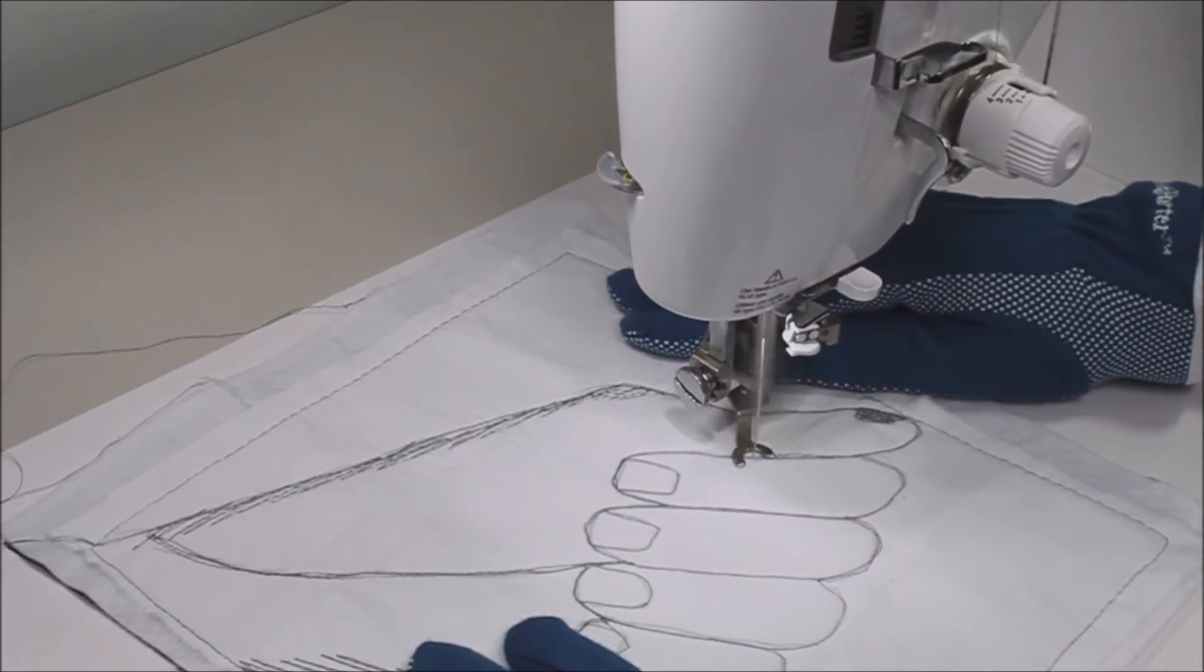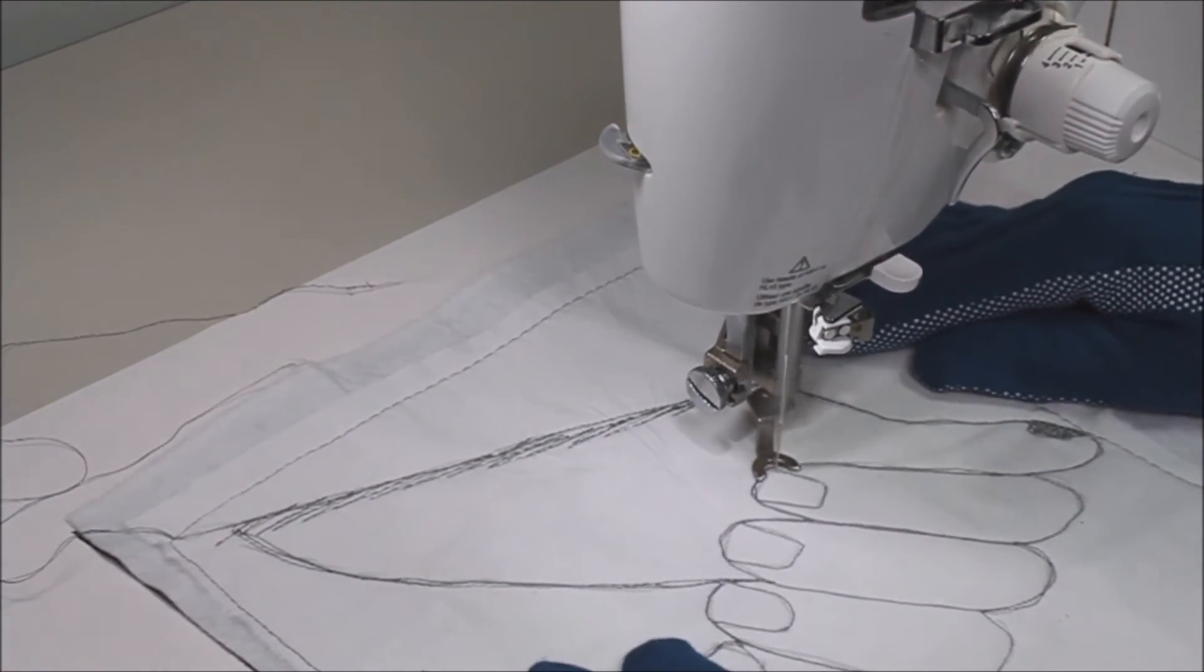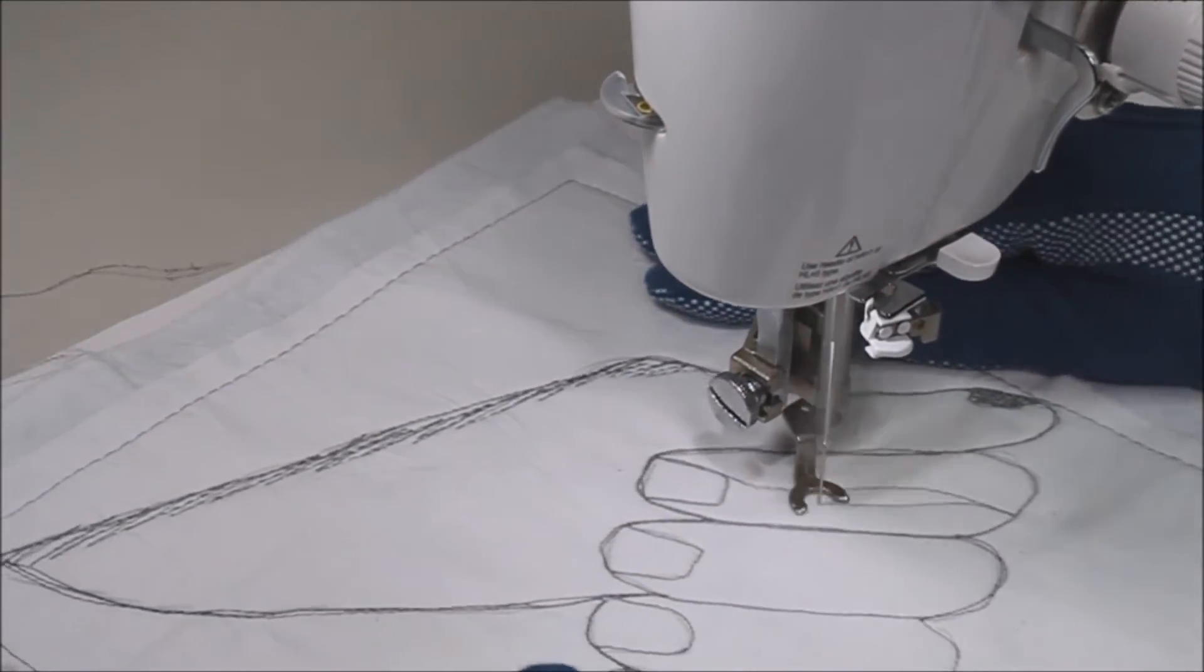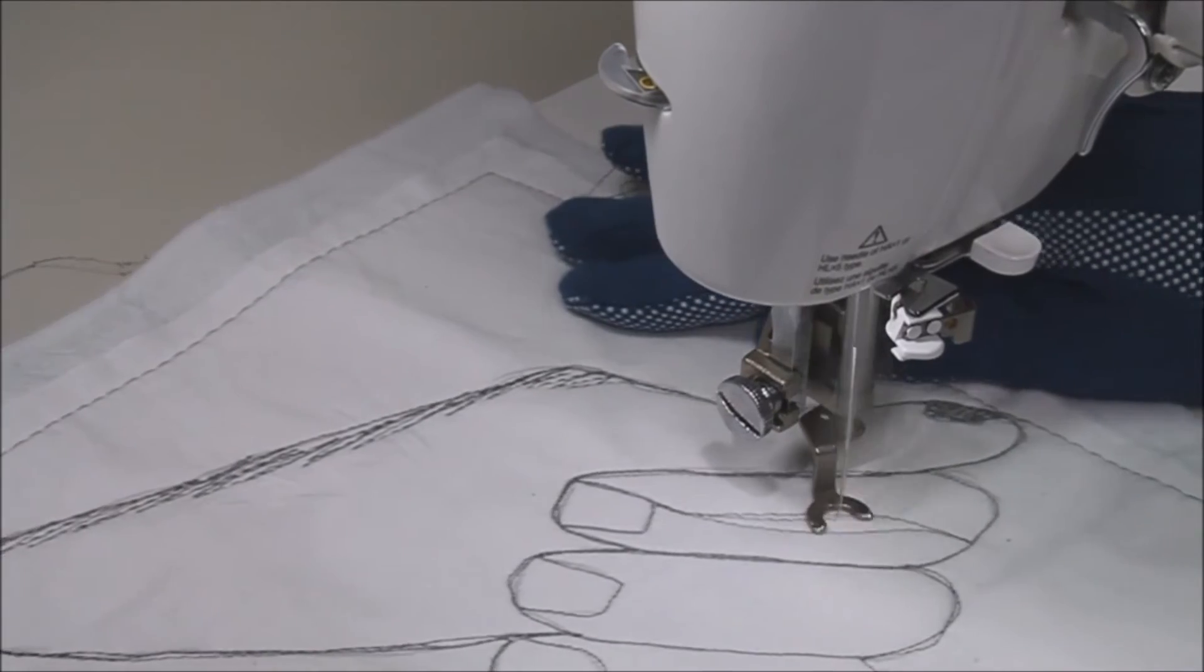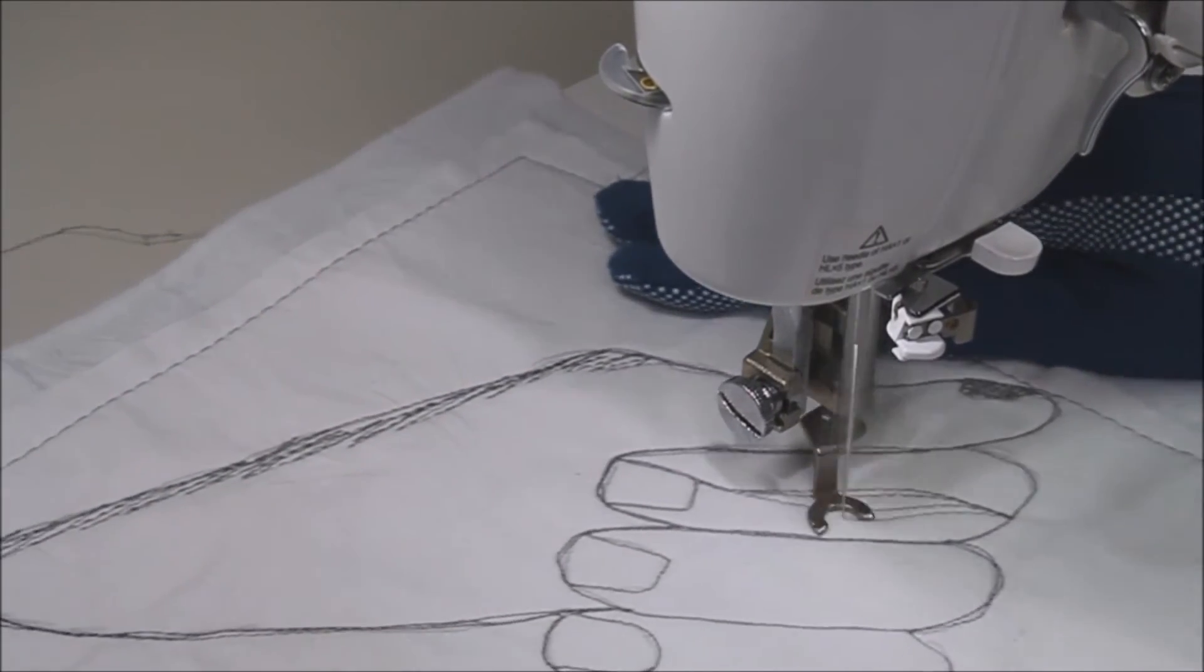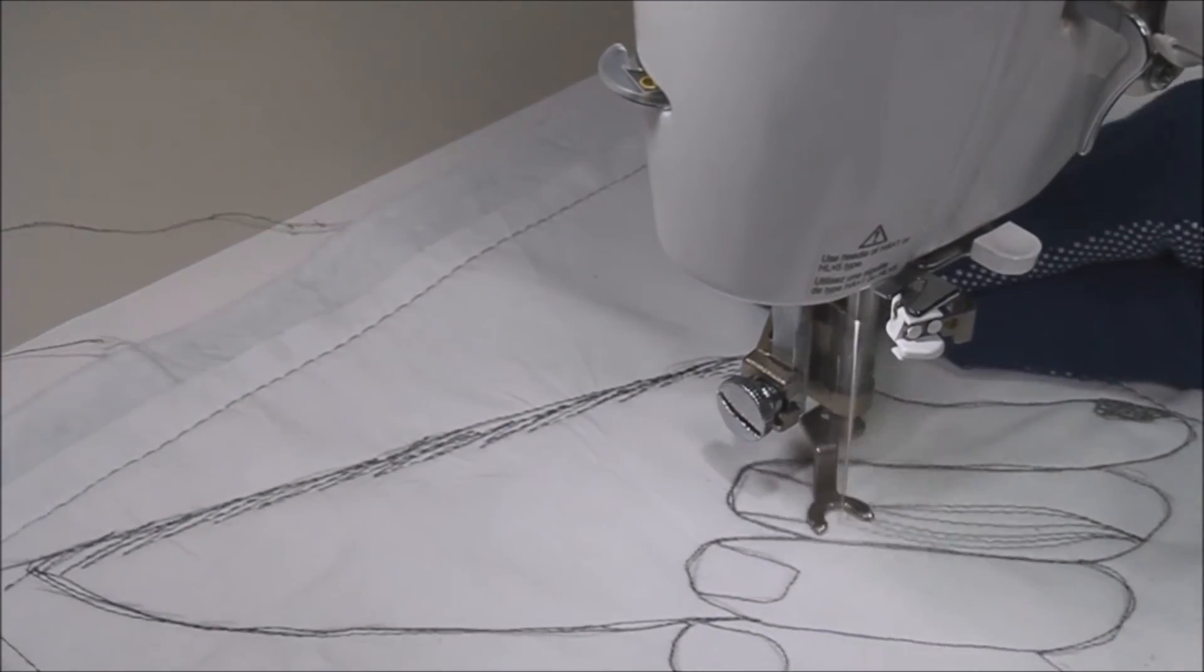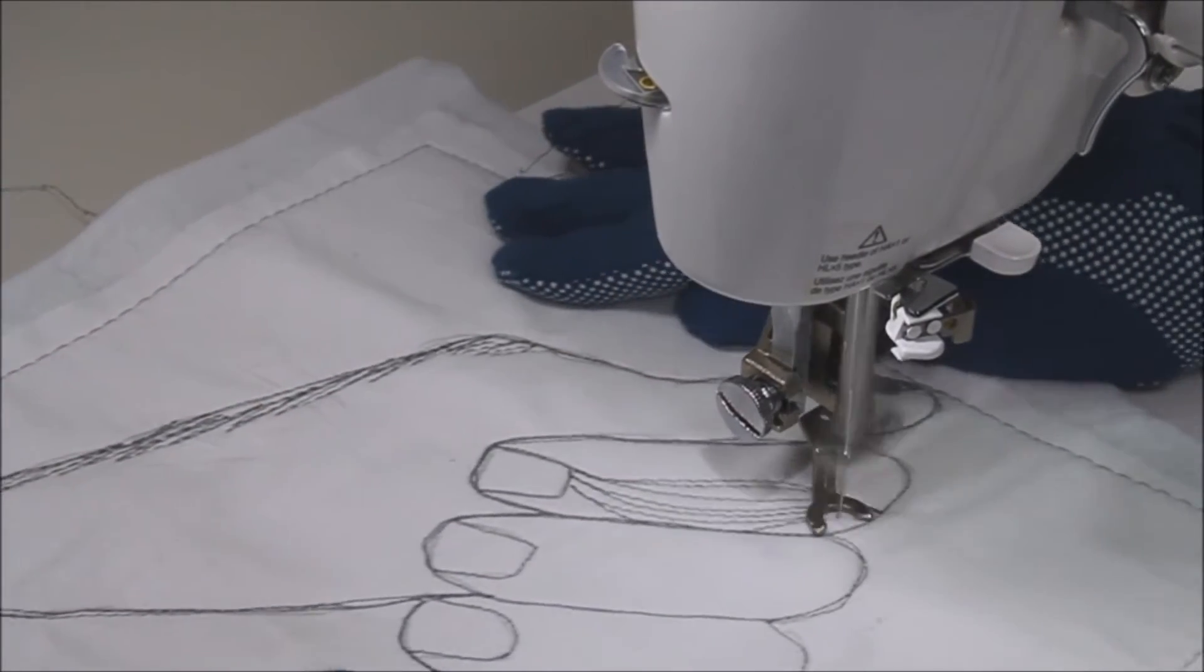Now I have to travel to the other fingernail. Because this is continuous stitching, I don't want to stop when I'm stitching and cut the thread. So I have to find a way and a path to travel along to where I want to go. In this place I'm doing very light shading.